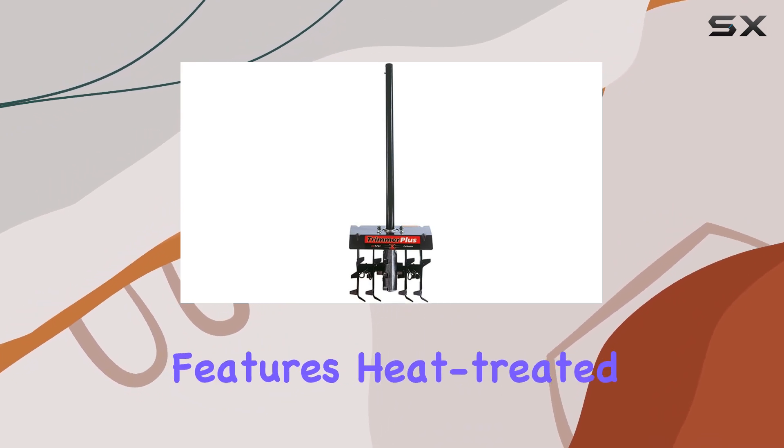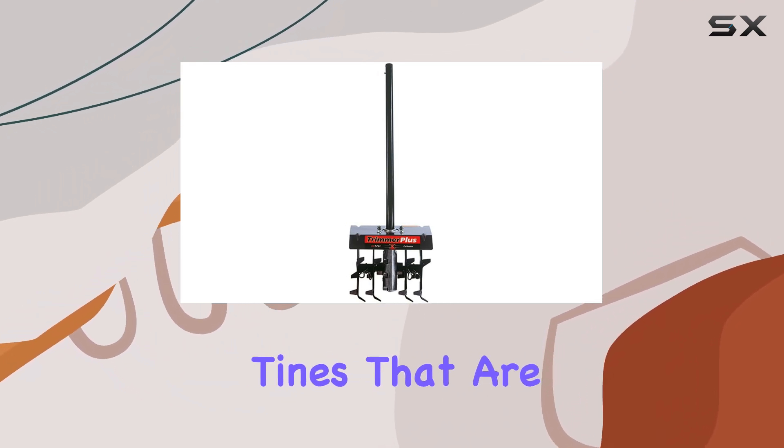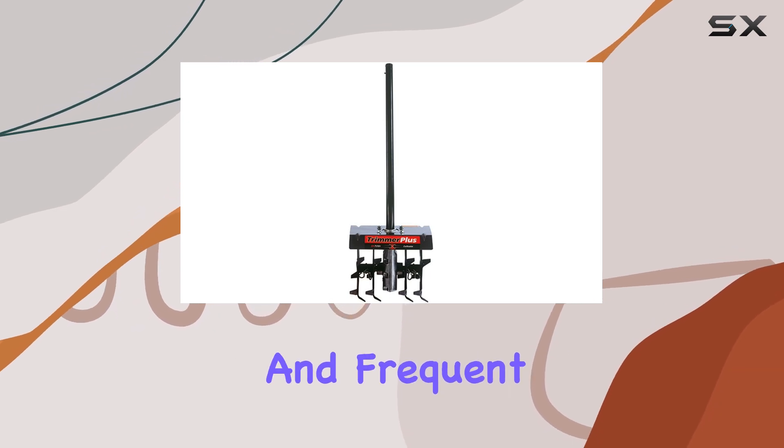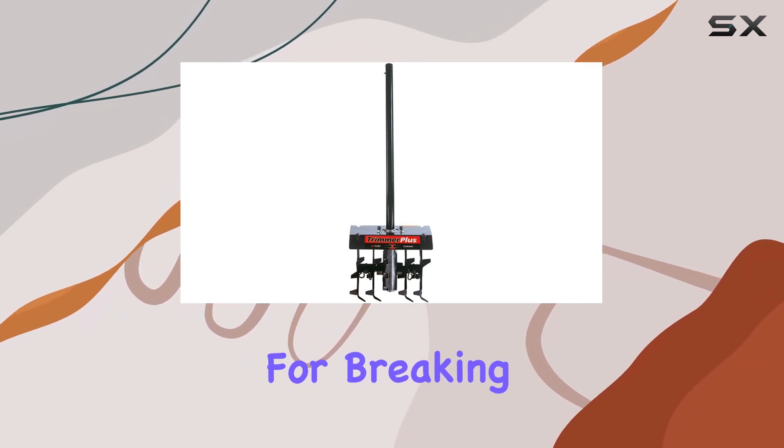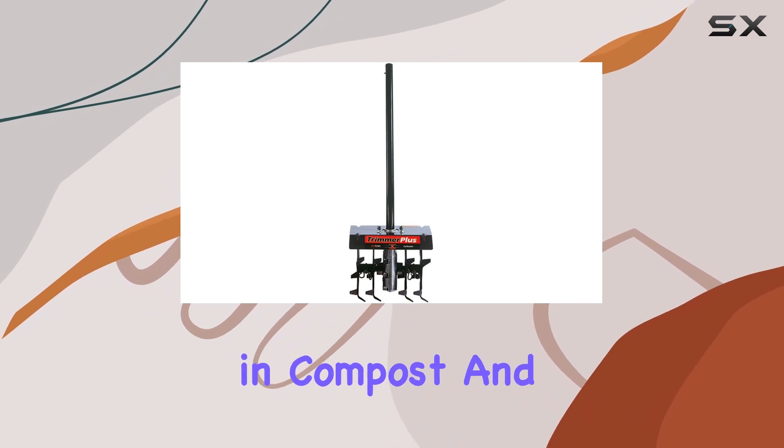The cultivator features heat-treated 8-inch steel tines that are built to withstand tough conditions and frequent use. These tines are perfect for breaking up soil and mixing in compost.